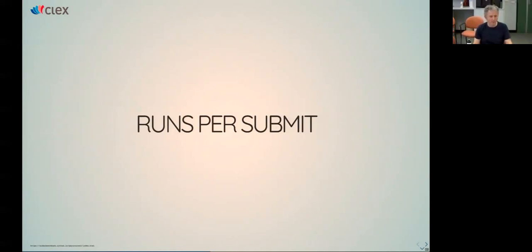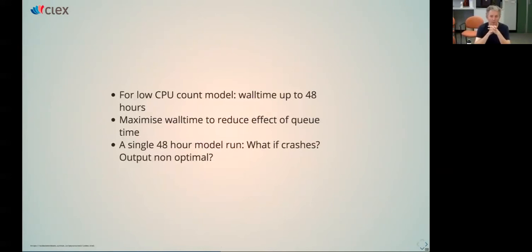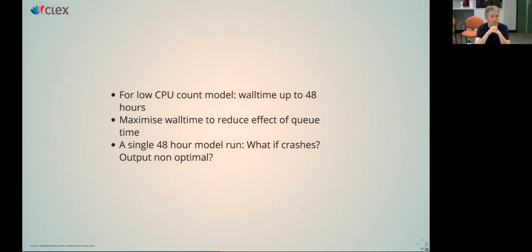Another feature - runs per submit. For a low CPU count model you can have a wall time of up to 48 hours on Raijin. There's a command called nf_limits to find out your queue limits - I think up to 256 CPUs you can get 48 hours, up to 512 it's 24 hours, and up to around 1000 it's 10 hours.